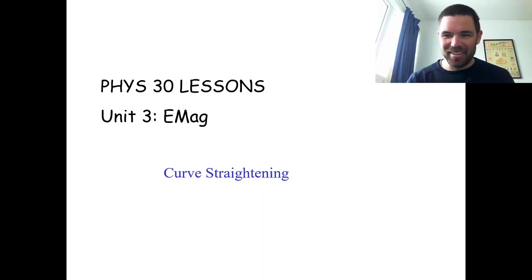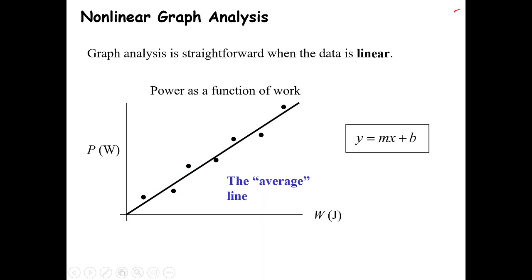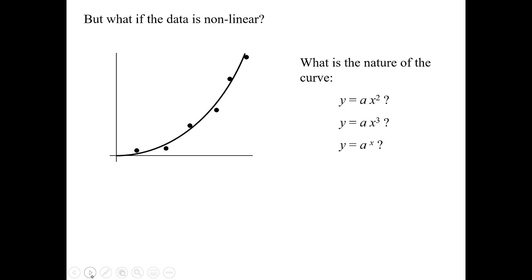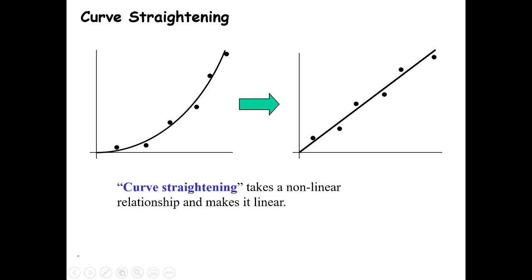Curve straightening. The whole thing we talked about in the last lesson was trying to make sense out of scientific graphs. Remember, the manipulated variable always goes on the x-axis, and the responding variable always goes on the y-axis. Still the same true for today, just a little bit more challenging in that we're looking at graphs that are not necessarily straight lines. The whole key is to make it into a straight line — a direct relationship. The nice thing about a direct relationship is it'll always go through our origin.